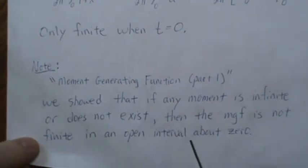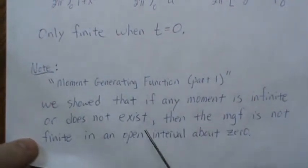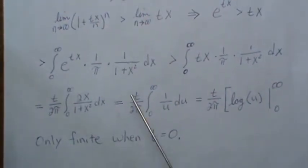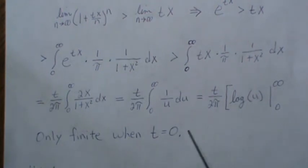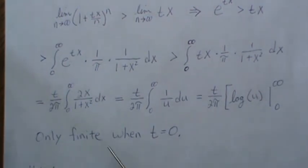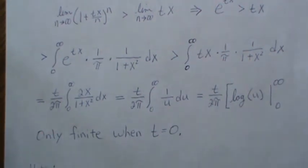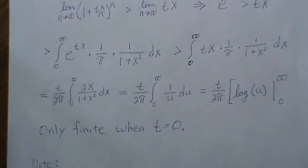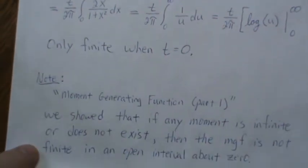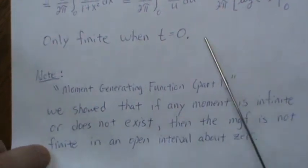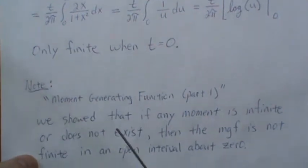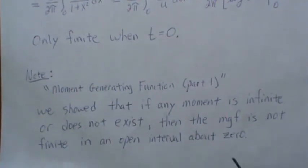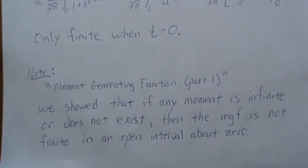You can't go backwards - you can't say if the MGF is not finite in an open interval, therefore there are no moments. That's not true. It's the other way: if the moment is infinite or doesn't exist, then there is no open interval about zero for the MGF. In the referenced video we prove that.